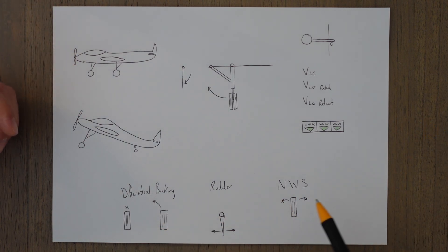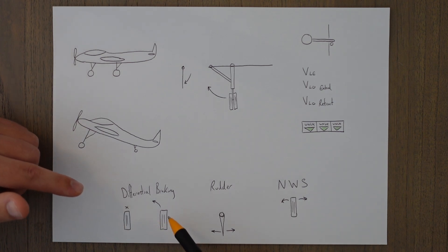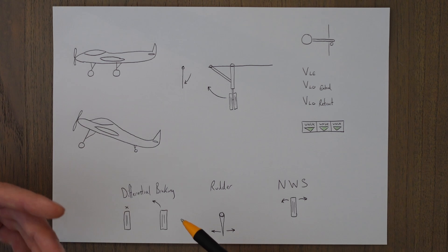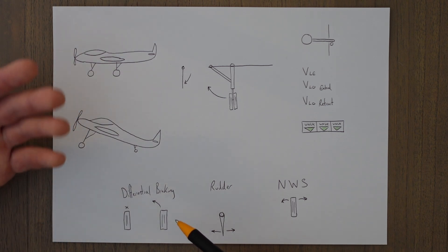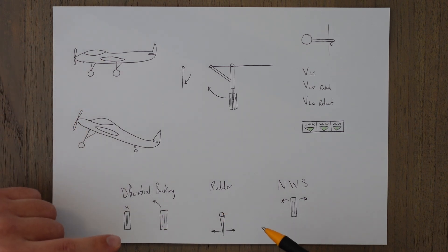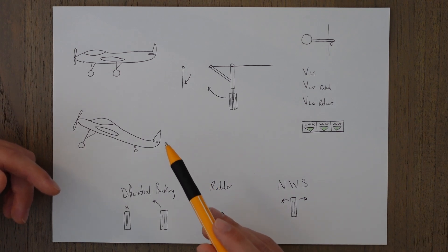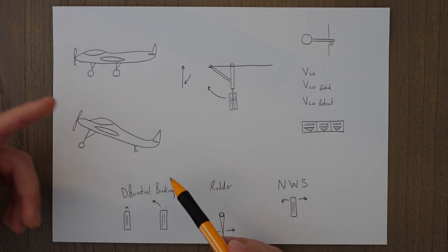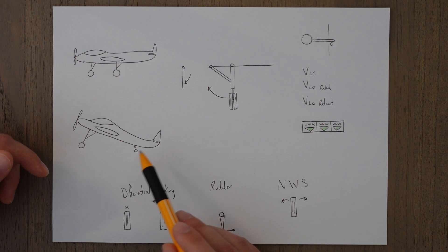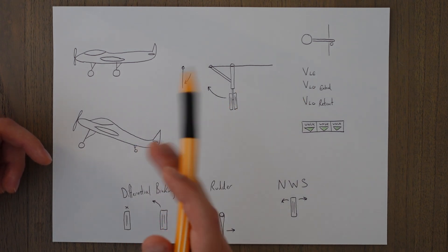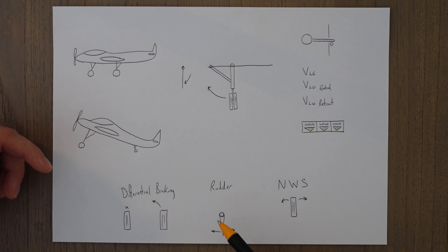To steer, we've basically got three methods. In a tail dragger, we can use differential braking—we apply the brakes on this side, we don't apply them on that side, and it turns towards the wheel that has been braked. We also can use the rudder. Rudder basically generates an aerodynamic force from the rear of the aircraft and it will turn us around the main wheels. And that's why the tail wheel of a tail dragger has a little bit of freedom of movement so it can rotate around with the rudder.